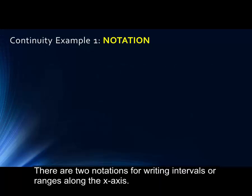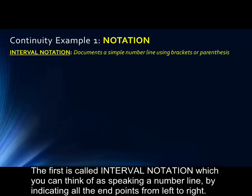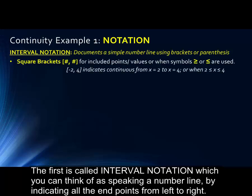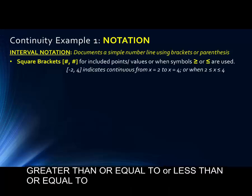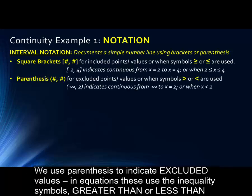There are two types of notations for writing intervals or ranges along the x axis. The first is called interval notation, which you can think of as speaking a number line, defining the number line from point to point by indicating all the endpoints from left to right. We use square brackets to indicate included values. In equations, these use the inequality symbols with the line under, meaning greater than or equal to, or less than or equal to. We use parentheses to indicate excluded values. In equations, these would use the inequality symbols greater than or less than.